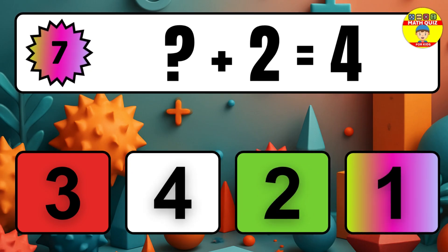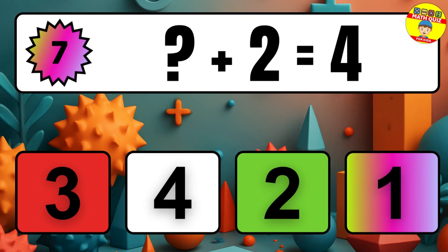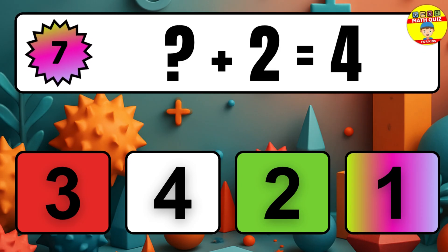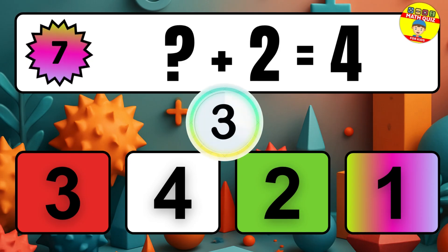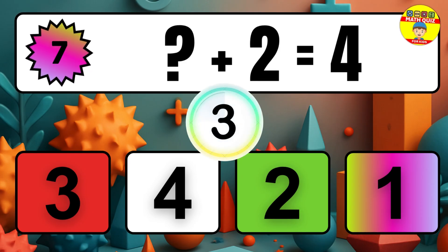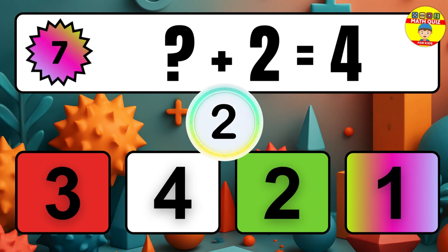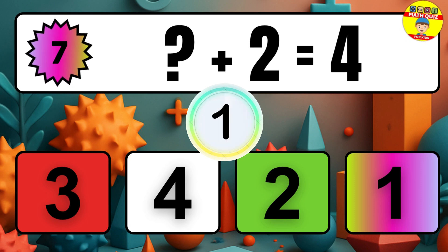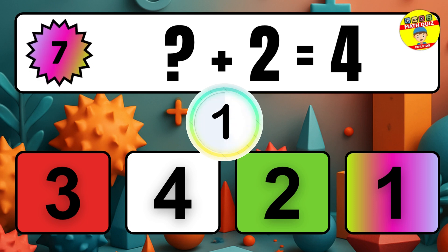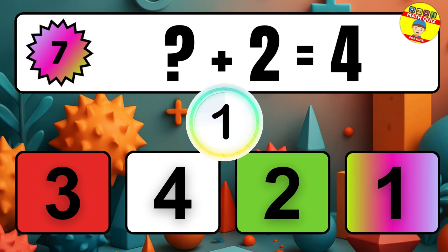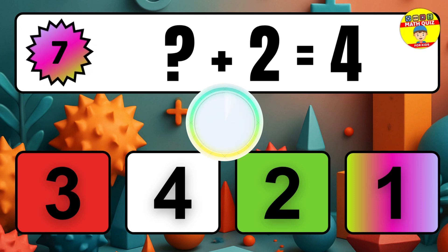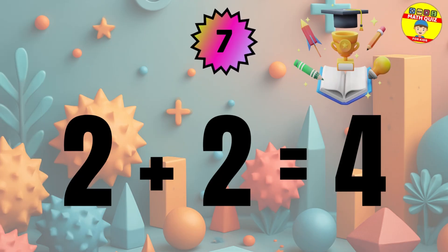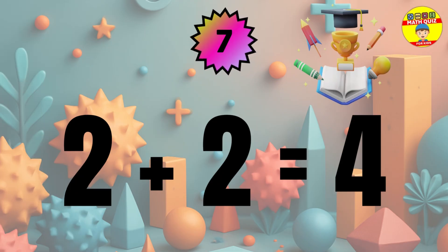Question 7. What number plus 2 equals 4? The missing number is 2.